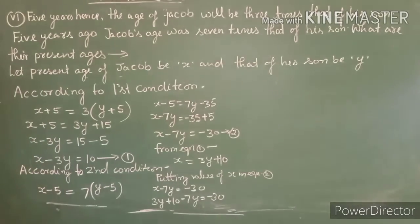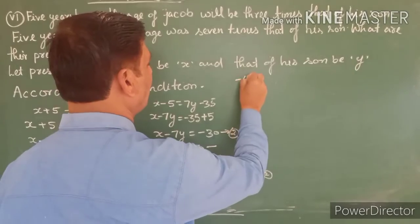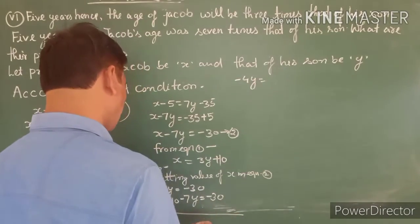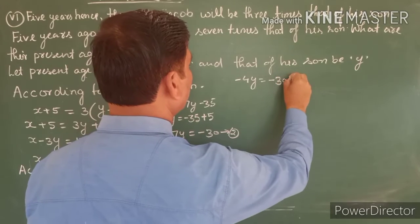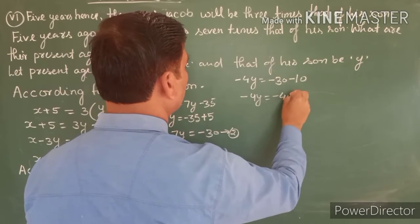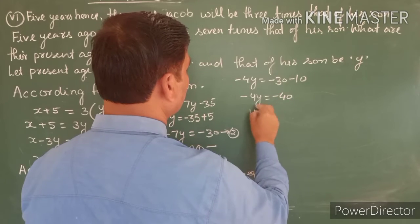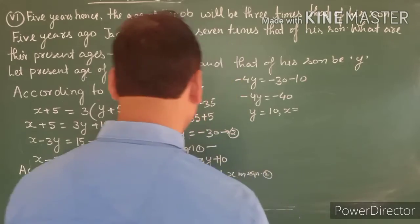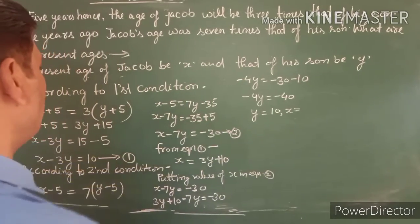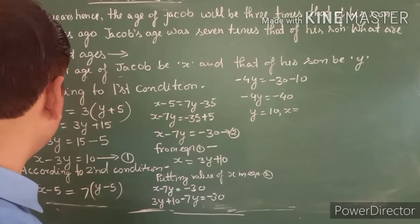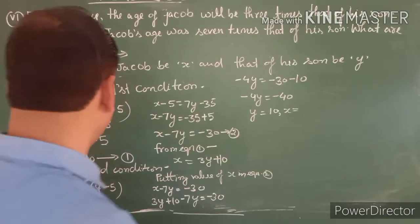So 3y minus 7y equals minus 4y. We get minus 4y equals minus 30, and 10 moves to the right becoming minus, so minus 4y equals minus 40. The negatives cancel, giving y equals 10. Now we will put the value of y back.